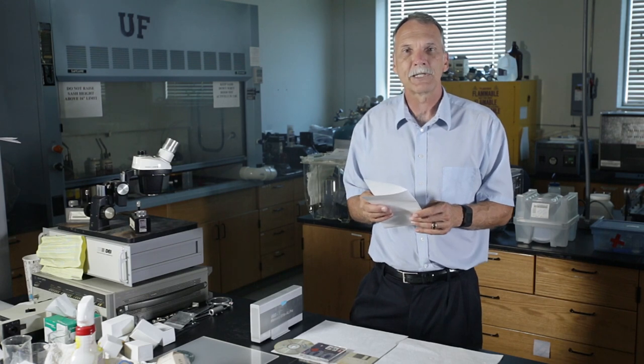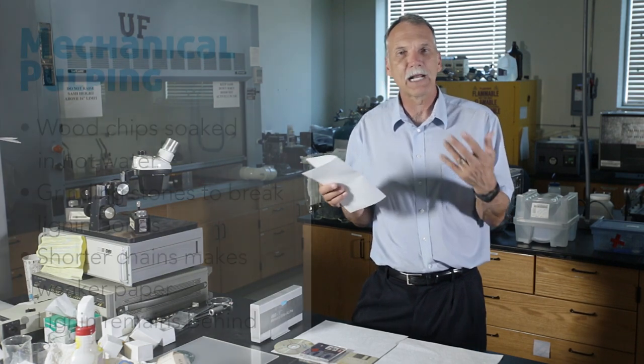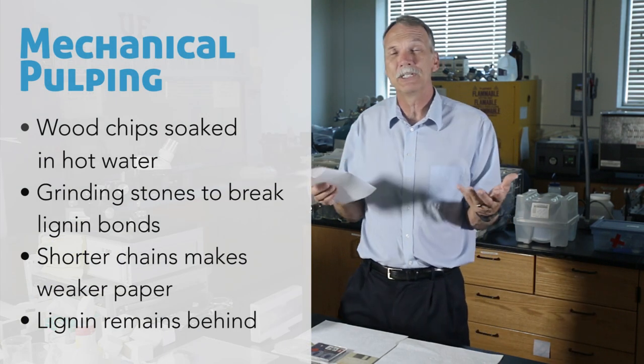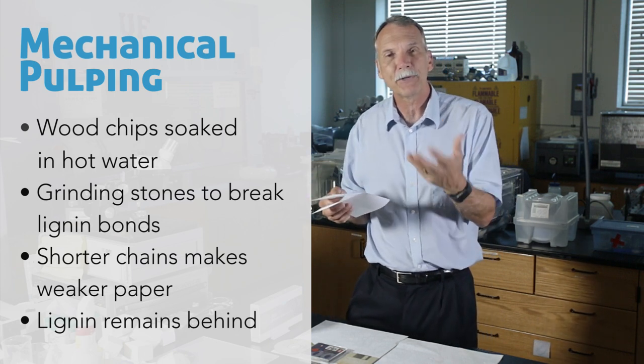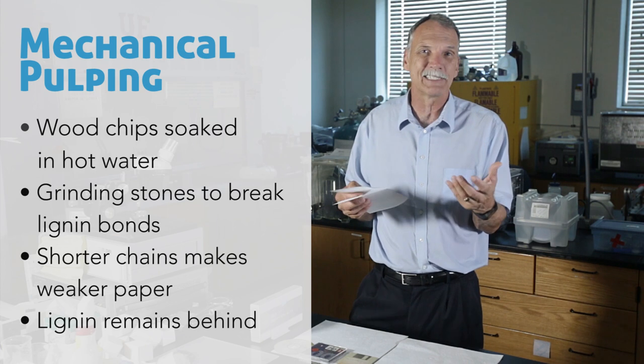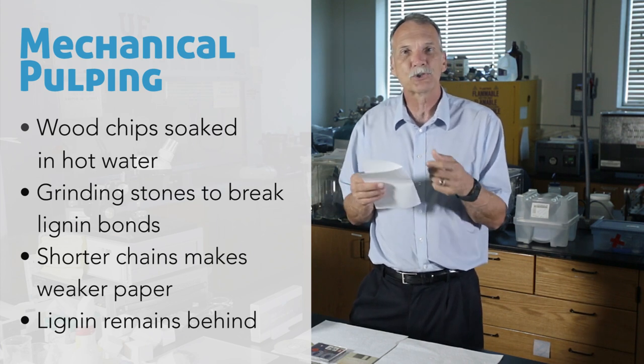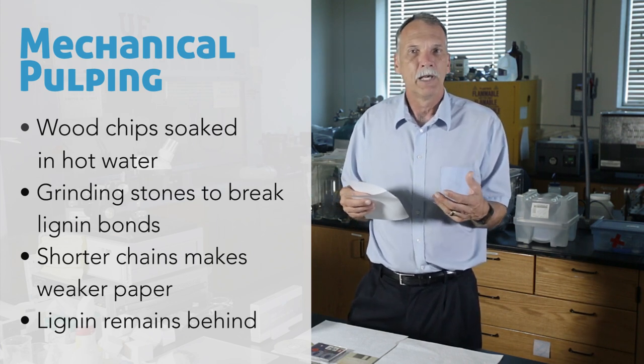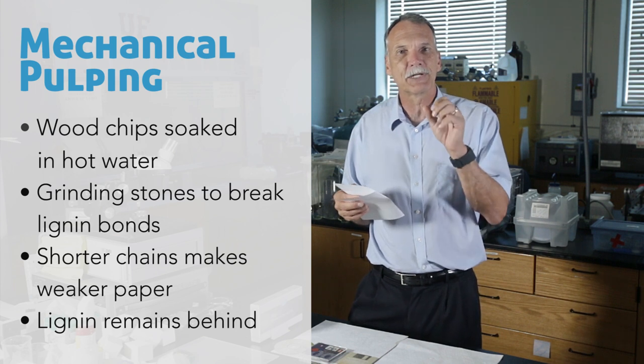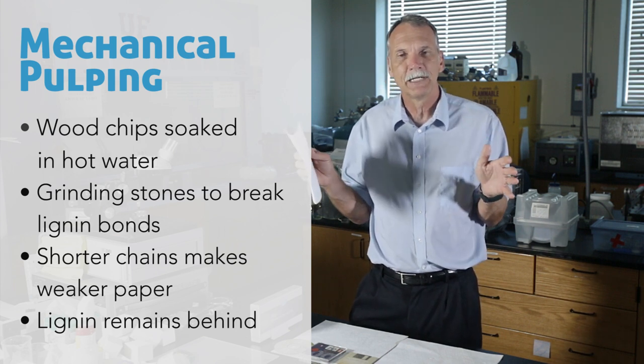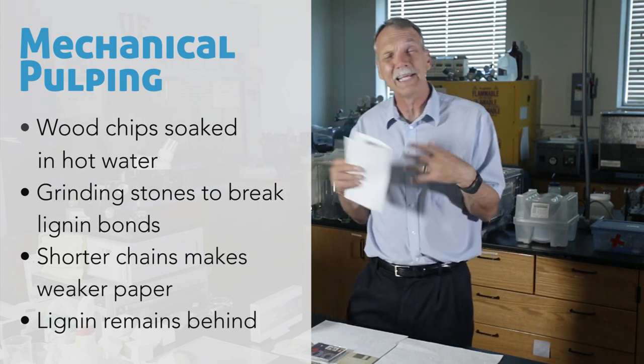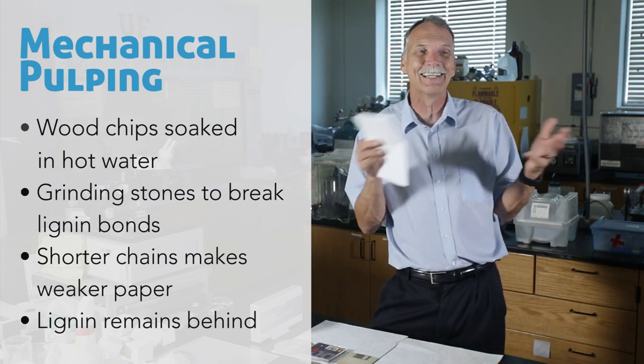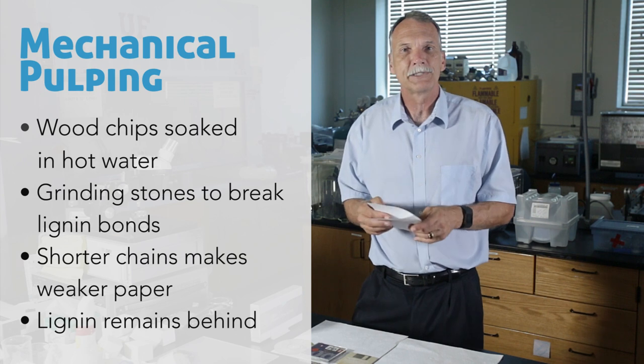Let's talk about mechanical pulping. In mechanical pulping, you're going to take wood chips, soak them in very hot water, then put them between grinding stones—which could be steel discs or stones—and try to break those lignin bonds. What's going to happen is you're going to wind up with shorter chains of the cellulose because you're also going to break up some of the cellulose. The lignin is going to be left behind. You haven't taken the lignin out; it's still there.